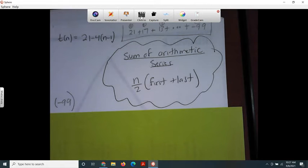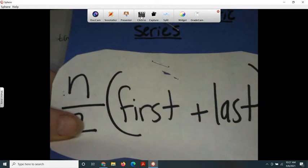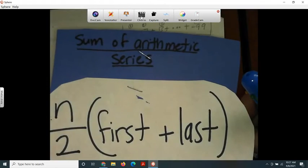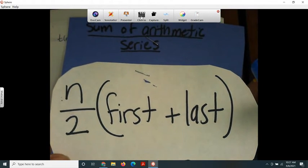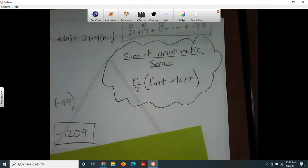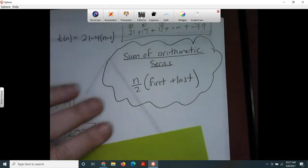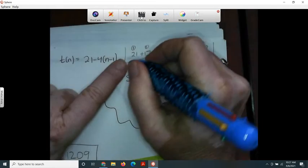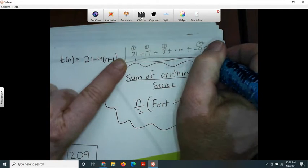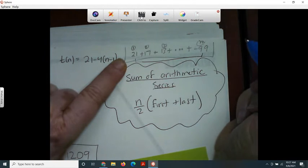Or maybe you weren't thinking of it that way—some people thought of it as a trapezoid. At this point we're just knowing that the numbers are going to pair up, like negative 99 plus 21.